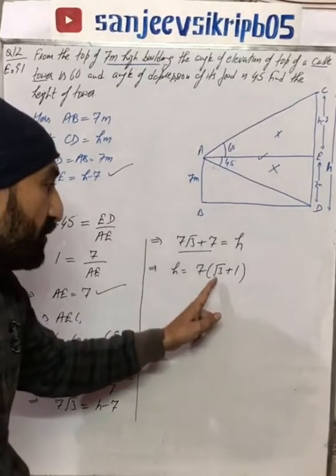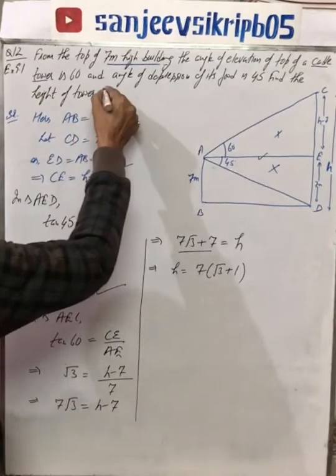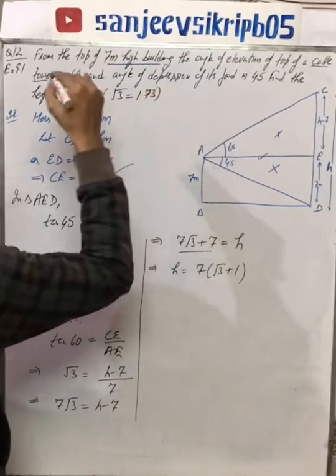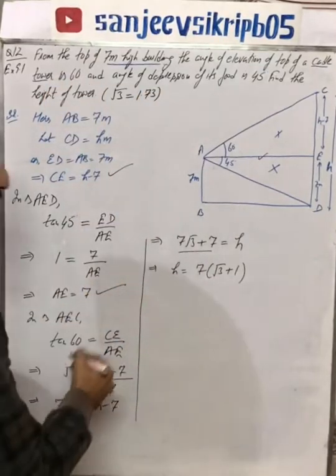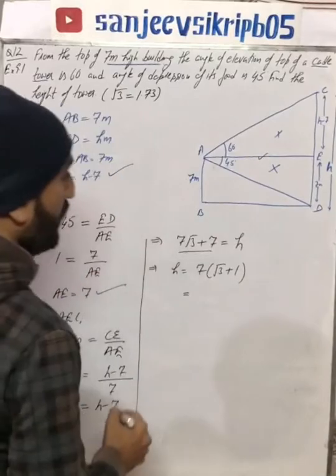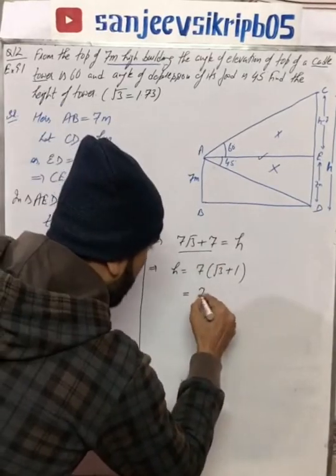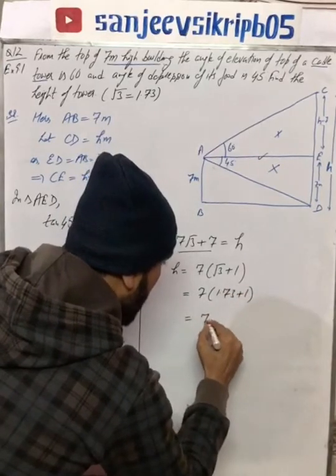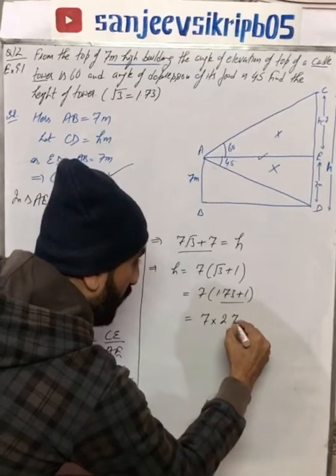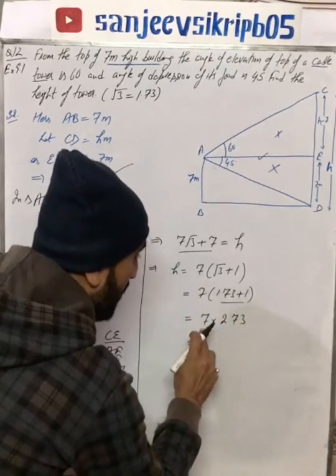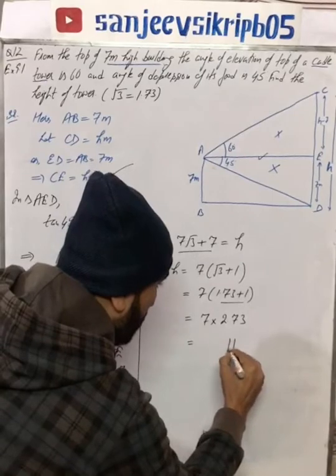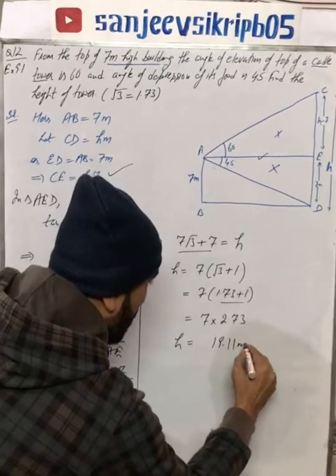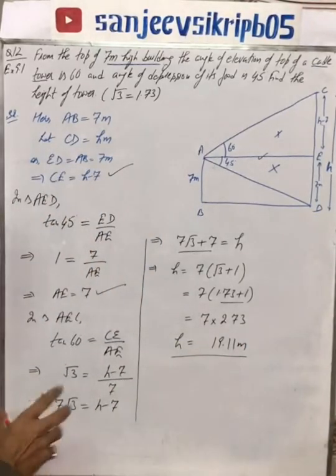You will put root 3 value when you have the question given. Use root 3 equals 1.73. So 7 root 3 is 7 times 1.73 plus 7. This is 2.73 times 7, which equals 19.11 meters, which is the height of the cable tower.